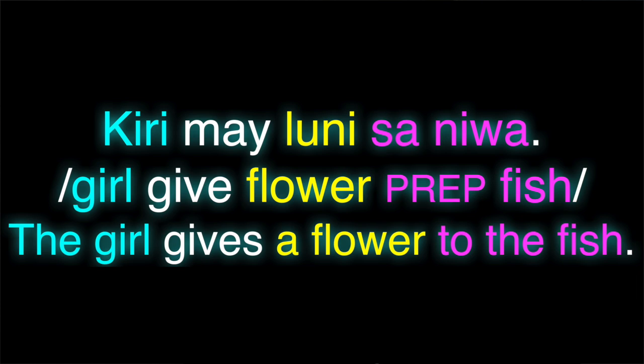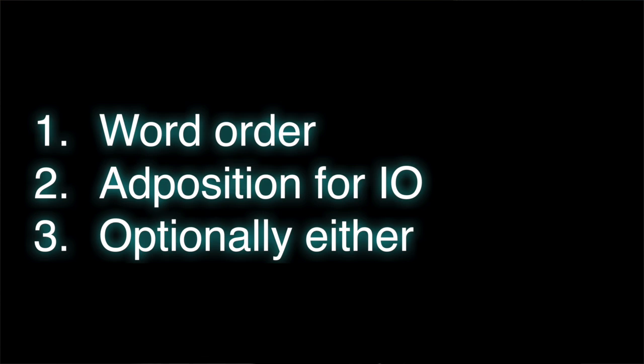In English, there is one other thing you can do if you really need the indirect object to be out of the verb structure: you can kick it out where it becomes part of a prepositional phrase. In our little toy language, that would be 'Kiri mai luni sa niwa' — the girl gave a flower to the fish — where sa is acting just like 'to.' Those are our first three strategies: we can do it just like English, either with word order or with a prepositional phrase. So that's one strategy, another strategy is to do it just with word order, and a third strategy is to do it just with adpositions.